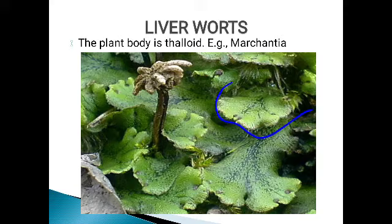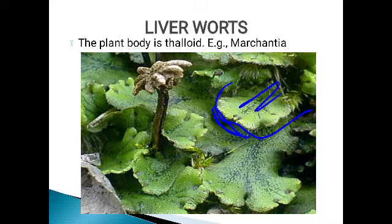The plant body is thalloid and it is dorsiventral. Dorsiventral means it has a dorsal surface and below that a ventral surface — just like a leaf has a dorsal and ventral surface. The thallus of liverworts is dorsiventral, and it can be seen growing prostrate on the substrate or soil surface. Prostrate means it grows horizontally on the soil surface, not vertically upward.